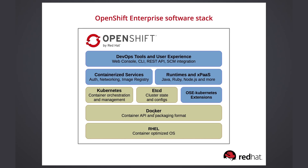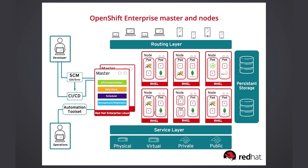OpenShift can also reach external source control management repositories and container registries and bring their artifacts into the OpenShift cloud. Looking at another architecture diagram, OpenShift provides a routing layer that allows a service to be exposed through a fully qualified domain name — this is an implementation of HAProxy. One of the chief features OpenShift adds is the capability to create application containers using the source-to-image process. The developer provides the URL of source code management for a given application, OpenShift pulls the source, builds it, and creates a specific type of container image with the application deployed.